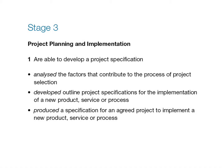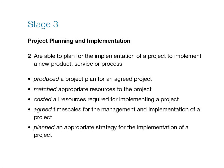For this part of the assignment, you'll need to demonstrate that you are able to develop a project specification, showing that you have analysed the factors that contribute to the process of project selection, developed outline project specifications for the implementation of a new product, service or process, and produced a specification for an agreed project. You need to demonstrate that you are able to plan for the implementation of a project, showing that you have produced a project plan, matched appropriate resources to the project, costed all resources required, agreed timescales for the management and implementation of a project, and planned an appropriate strategy for the implementation of a project.